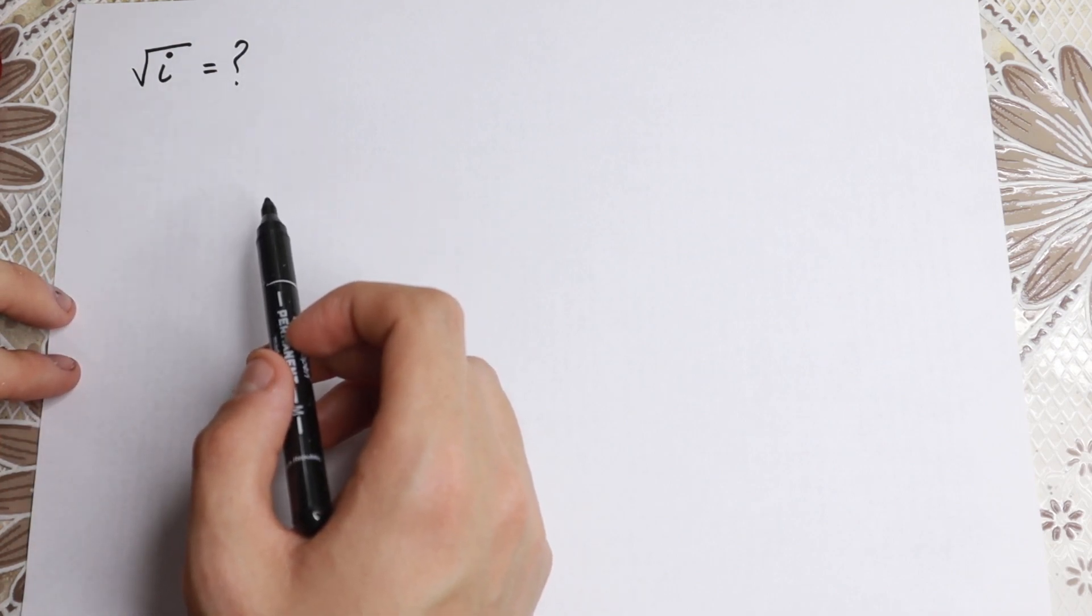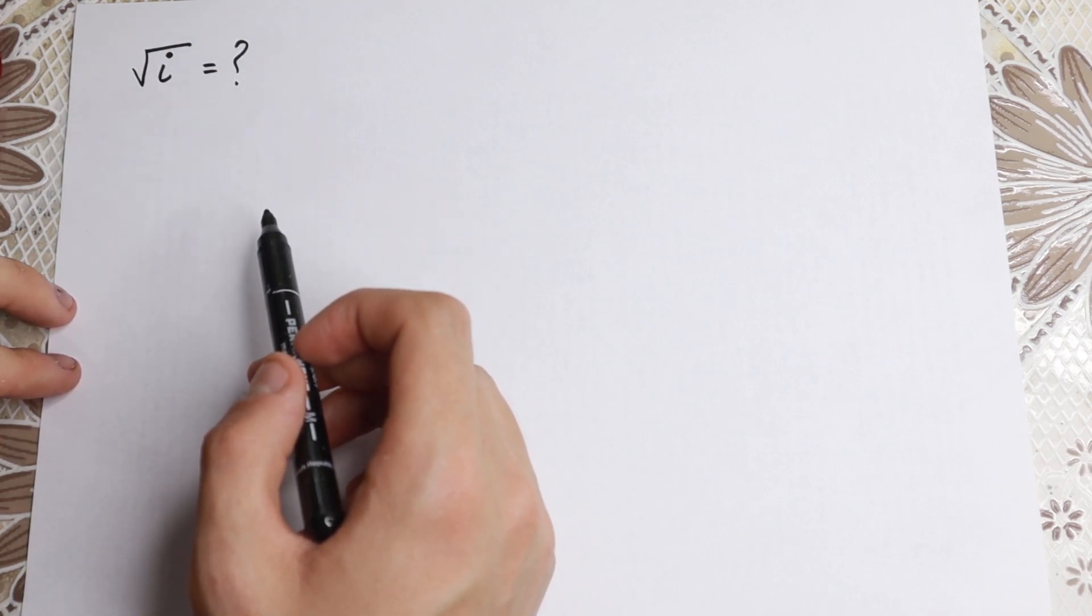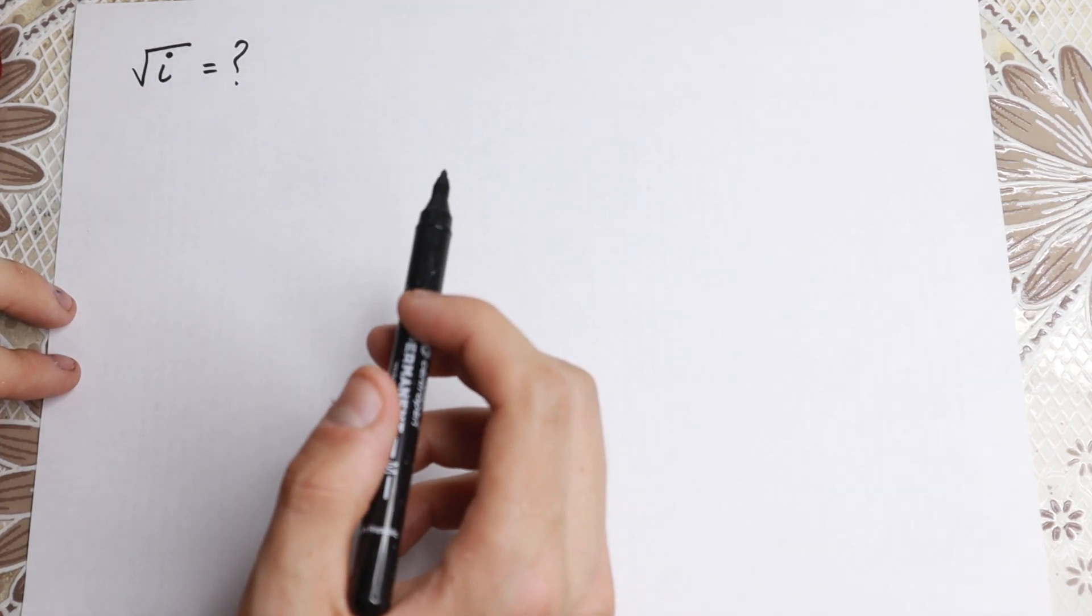We need to find the square root of i. There are a lot of approaches to solve this, but I want to show you my method, how I like to do this.